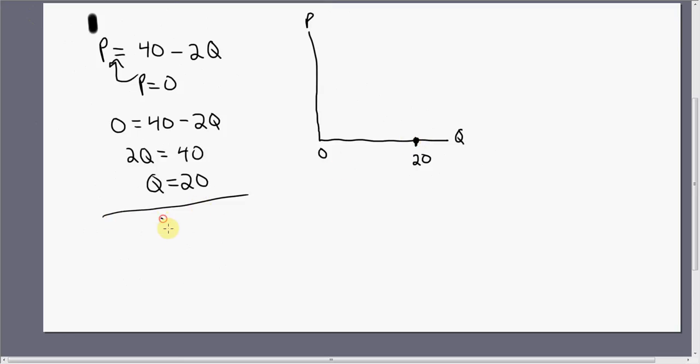Now let's find where Q equals, what happens when Q is 0? Plugging 0 into our inverse demand, we see that price equals $40. When Q is 0, P is 40. That's going to be up here somewhere. We connect the dots and we have another linear demand curve.